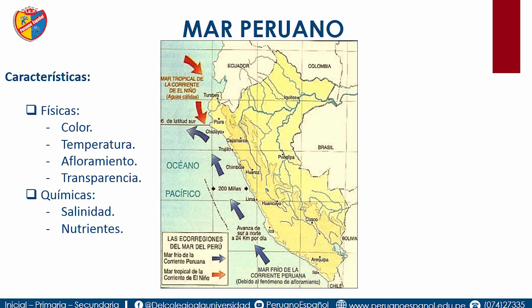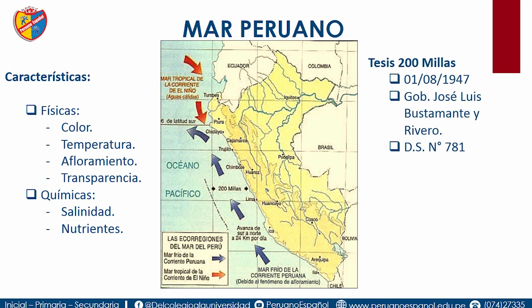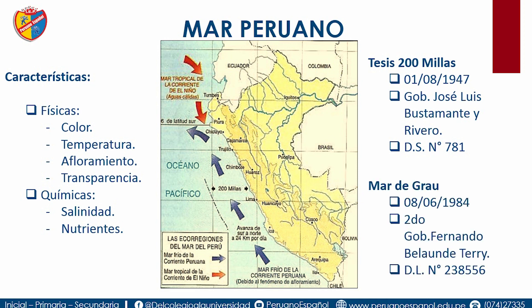¿Y qué son los nutrientes? Son los sulfatos, silicatos, nitratos, sales minerales. ¿Cuándo se le llama la Tesis de las 200 millas? Durante el gobierno de José Luis Bustamante y Rivero, con el Decreto Supremo 781. ¿Y cuándo se le llama Mar de Grau? Durante el segundo gobierno de Fernando Belaúnde Terry.